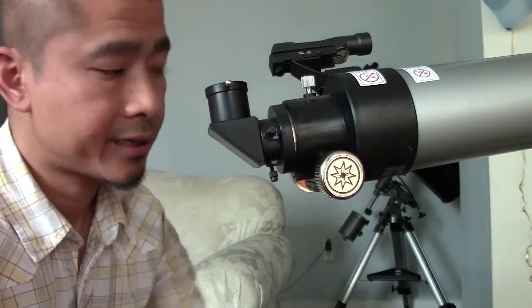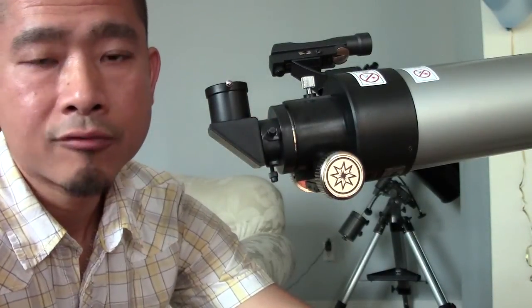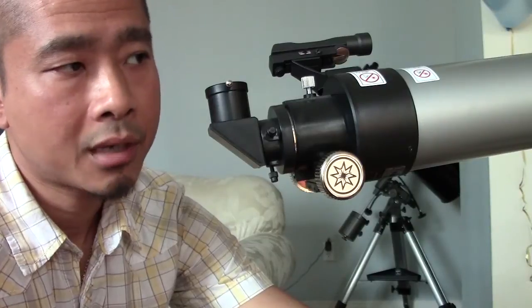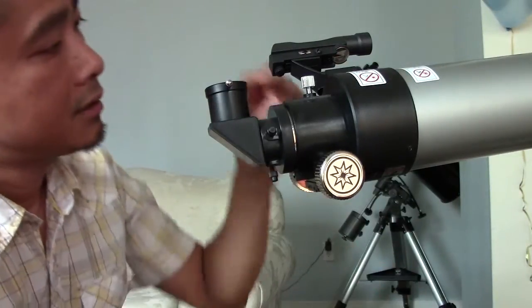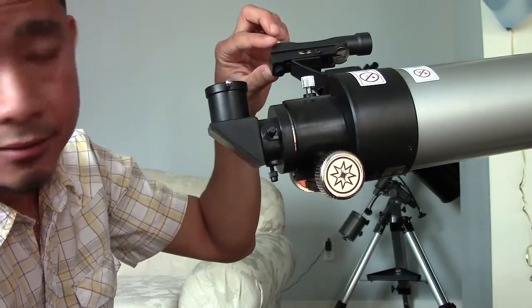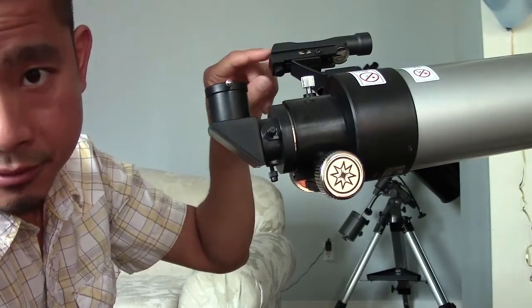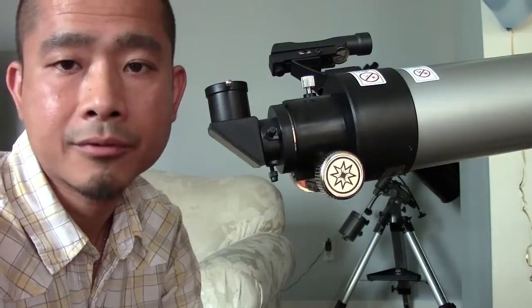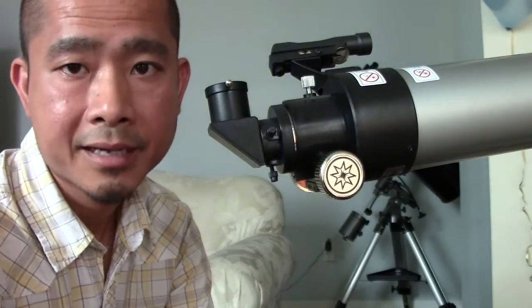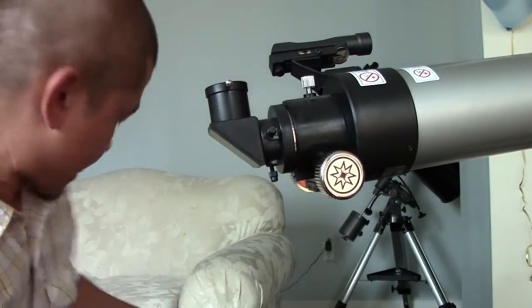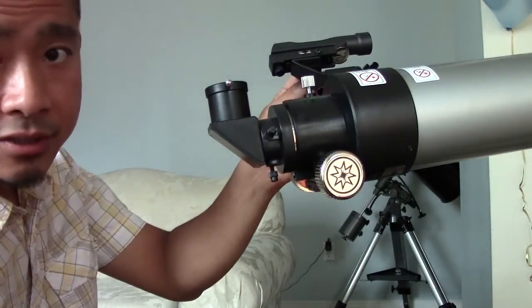A good example would be you set it up outside and look for a distant object, such as the top of someone's roof. You point this, make sure that there's a red dot in there, make sure that the red dot is pointed at the top of the roof. Look through your viewfinder, make sure that it's also pointing at the exact same point. There's an adjustment screw on the left side.